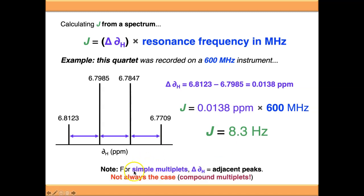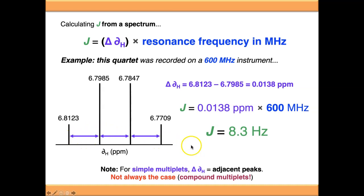This is how it works for simple multiplets — you measure the gap between adjacent peaks. When we come to compound multiplets, it's not always adjacent signals you're measuring. So when you watch the later video on compound multiplets, bear in mind this method applies only to simple multiplets like doublets, triplets, quartets, and so on. For compound multiplets, you'll need to think carefully about which signals to measure between to calculate J values.